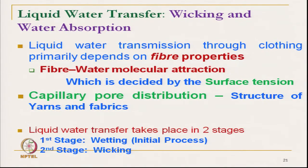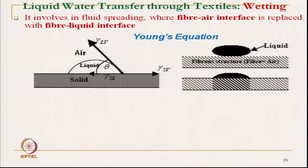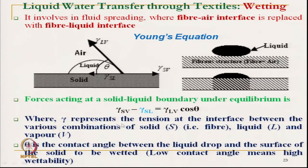Liquid is transmitted in two stages. The first stage is wetting, then it is wicking. Wetting is governed by the classical Young's equation: gamma SV (solid-vapour) minus gamma SL (solid-liquid) equals gamma LV (liquid-vapour) times cos theta, where theta is the contact angle.